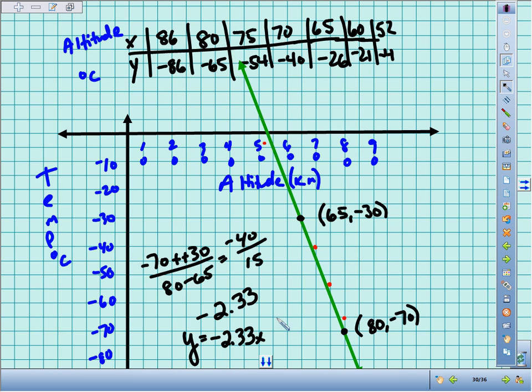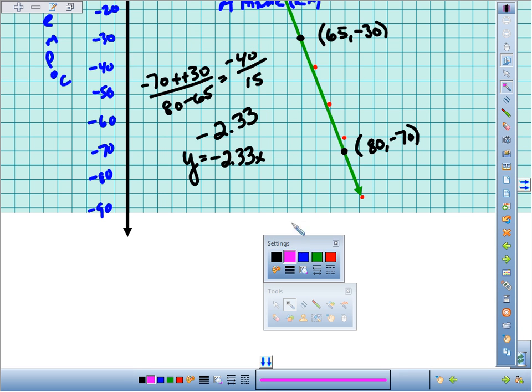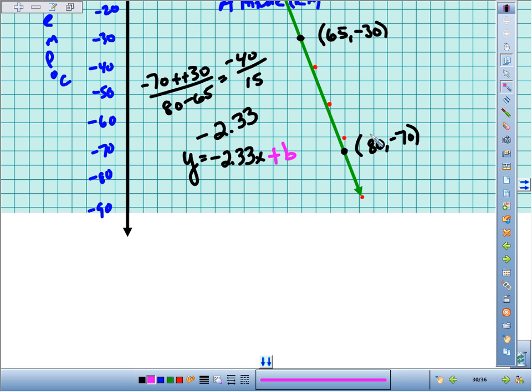So in this case what we can do is we can use some algebra to work backwards and find that y-intercept. The key is using a point that you know. Because if we take this point, for example, we know when we plug in 80 for x, we should get about negative 70 for y. So we'll go ahead and do that.